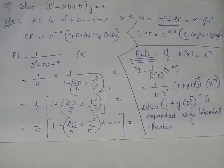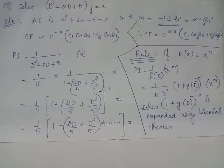Hence, the complementary function for this differential equation will be e raised to minus x multiplied by c1 cos 2x plus c2 sin 2x, or equivalently e raised to minus x multiplied by c2 cos 2x plus c1 sin 2x.